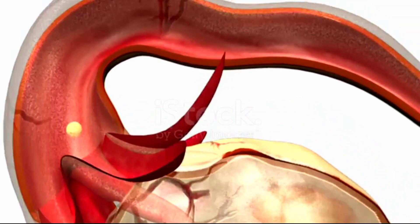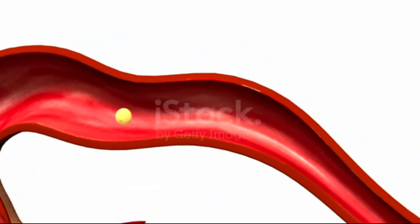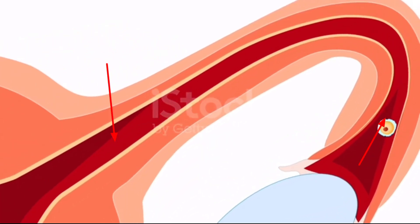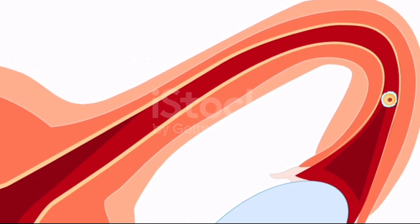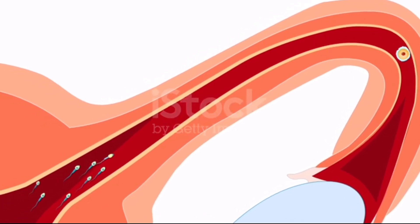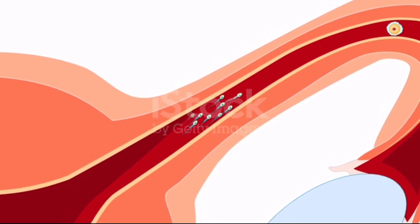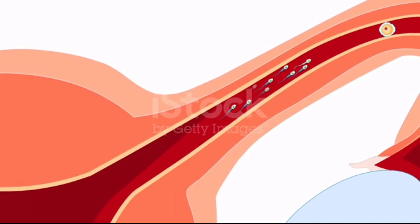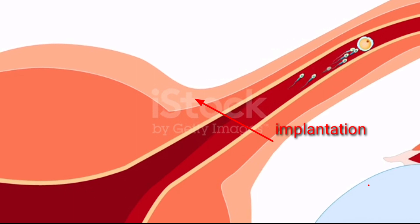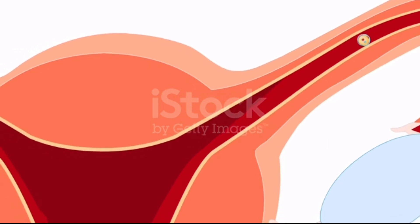The egg travels towards the fallopian tube. Whenever the egg reaches the midpoint of the fallopian tube, if intercourse occurs at that time, the sperm will travel towards the fallopian tube and attach to the egg. Whenever the sperm enters inside the egg, this process is called fertilization.